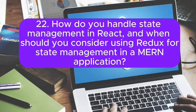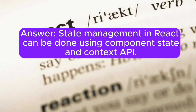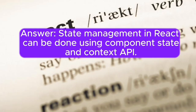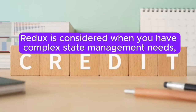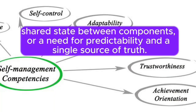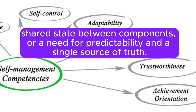22. How do you handle state management in React, and when should you consider using Redux for state management in a MERN application? Answer: State management in React can be done using component state and the Context API. Redux is considered when you have complex state management needs, shared state between components, or a need for predictability and a single source of truth.